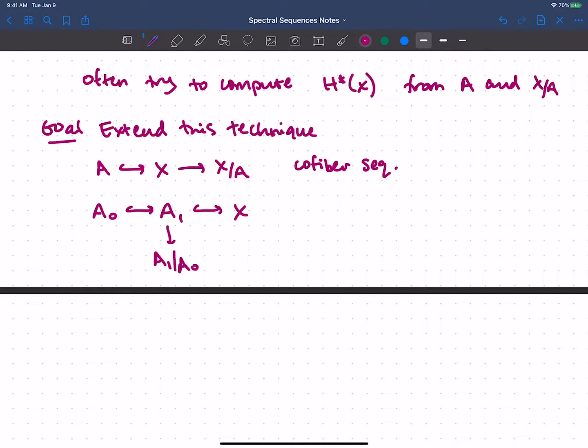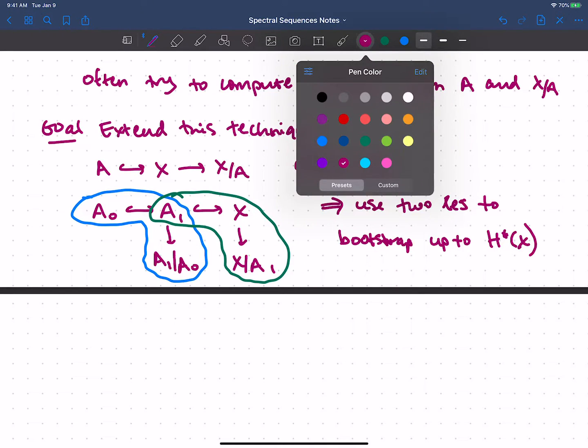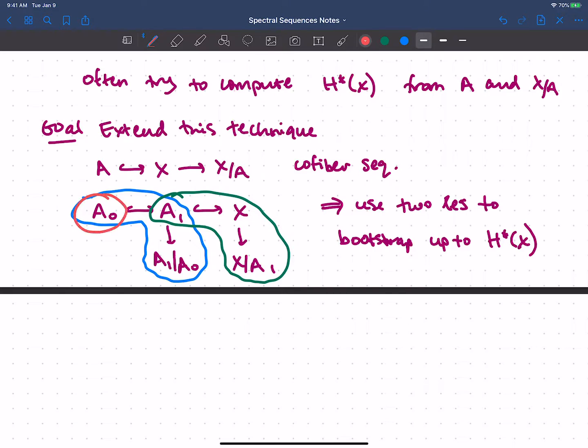A1 living in a nice way is going to give me a cofiber sequence. And A1 living in X in a nice way is going to give me a cofiber sequence. And then I'll have these filtration quotients. So what I mean is this first piece is a cofiber sequence. And then this next piece is a cofiber sequence. And in a sense,